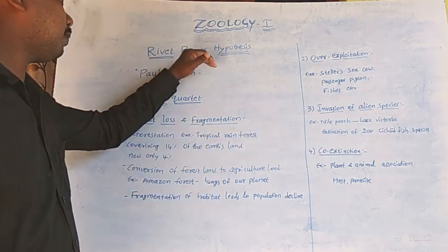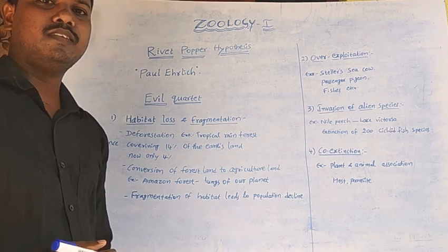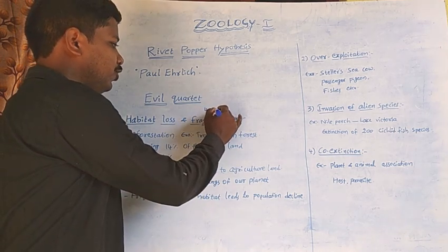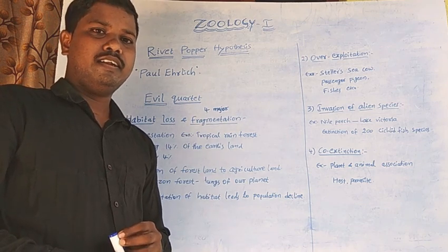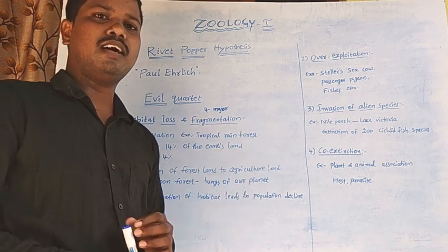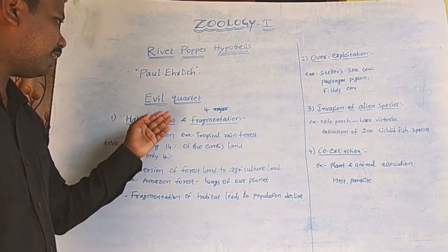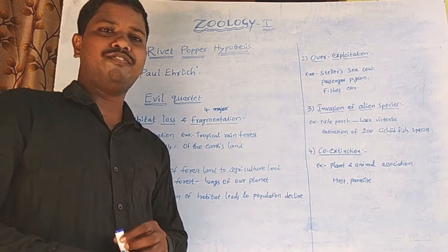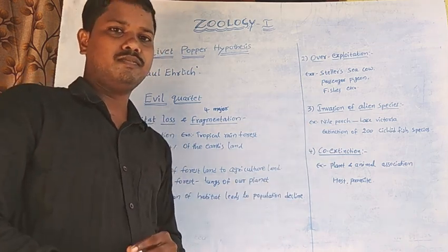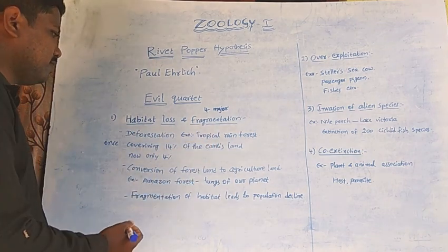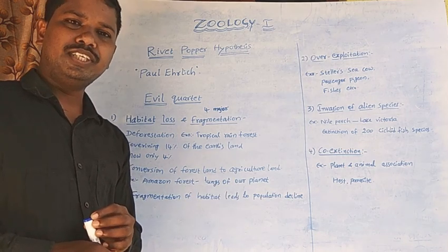That hypothesis is called the Rivet Popper Hypothesis. Now let us discuss the Evil Quartet. These are the four major causes which decline or destroy biodiversity, also called threats to biodiversity. The four causes in the Evil Quartet are: habitat loss and fragmentation, over-exploitation, invasion of alien species, and co-extinction.